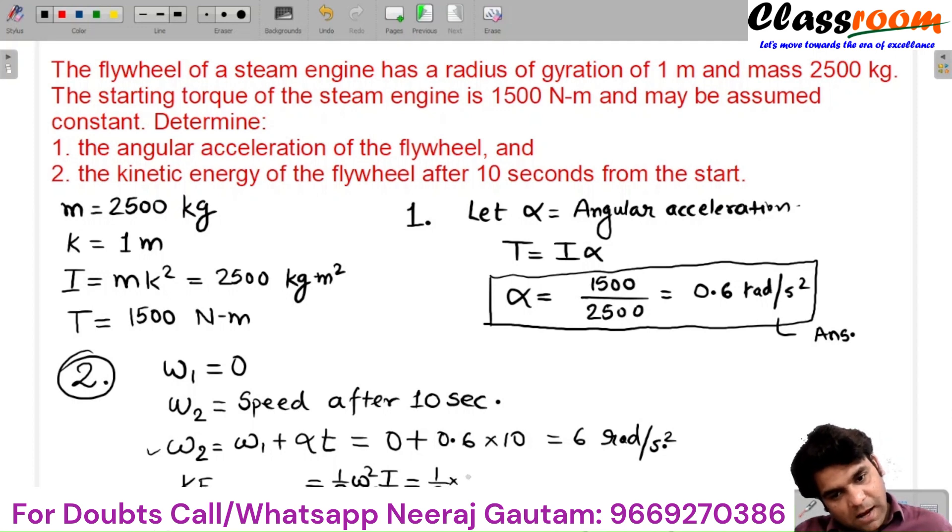So it is ½ × 2500 × 6² = ½ × 2500 × 36 = 45,000 N·m or 45 kilojoules.